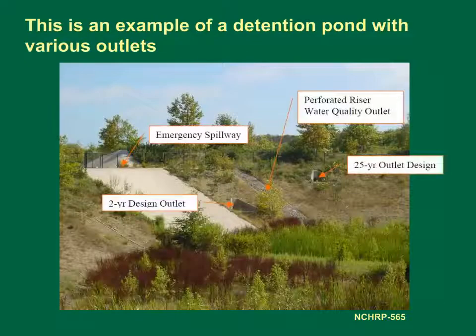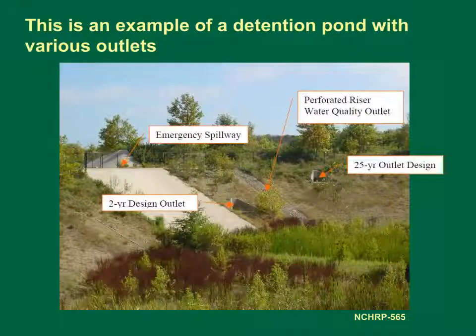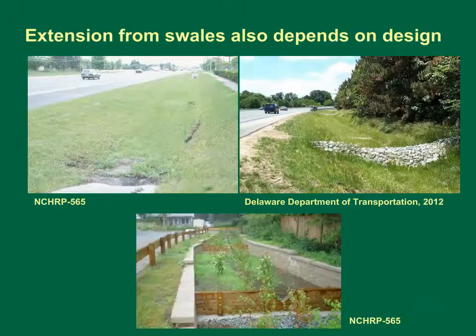This photograph shows a detention pond with a multiple-stage outlet design structure. The emergency spillway is probably designed for the 100-year design storm. The diagram shows a 25-year and a 2-year design storm outlet. The low flow outlet is not visible but is labeled as the perforated riser water quality outlet. This pond would have an outflow signature that is similar to the previous graph.